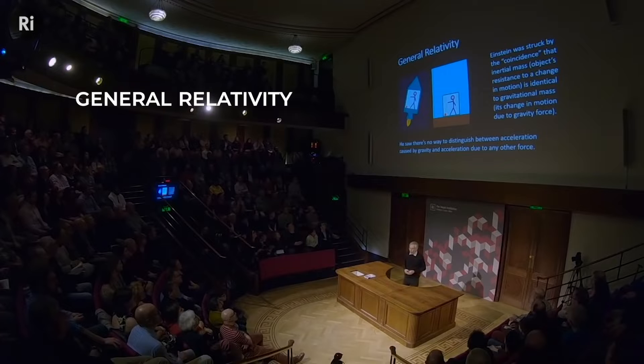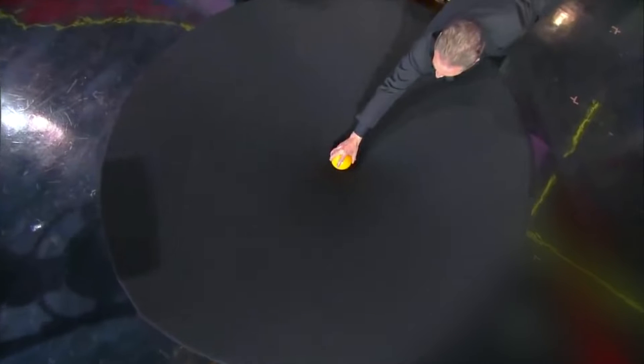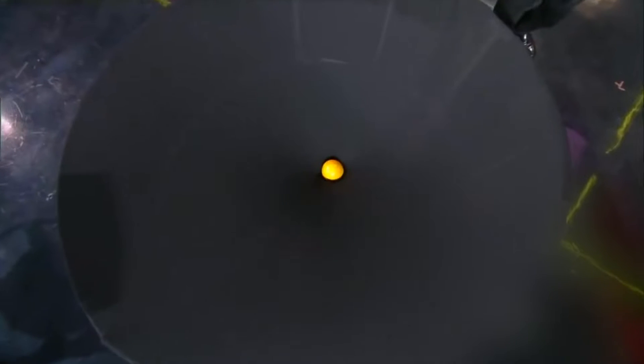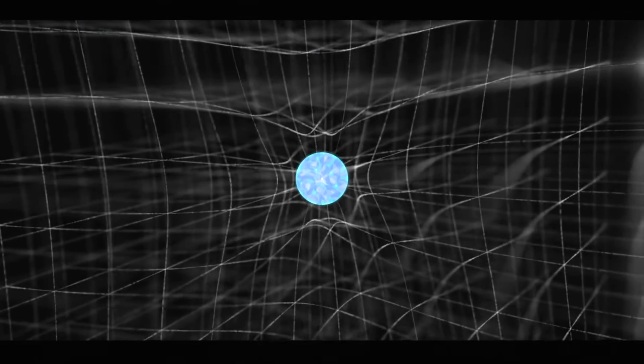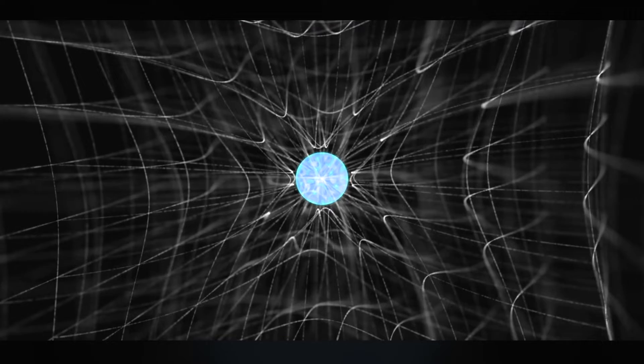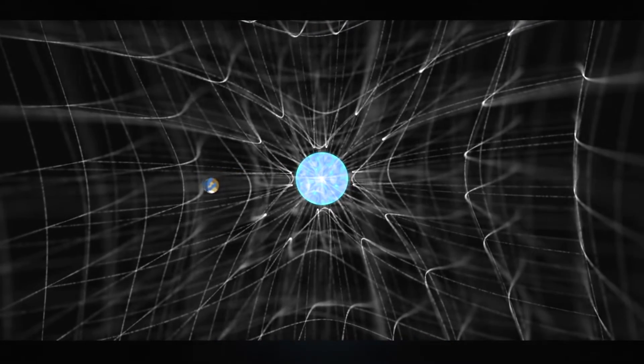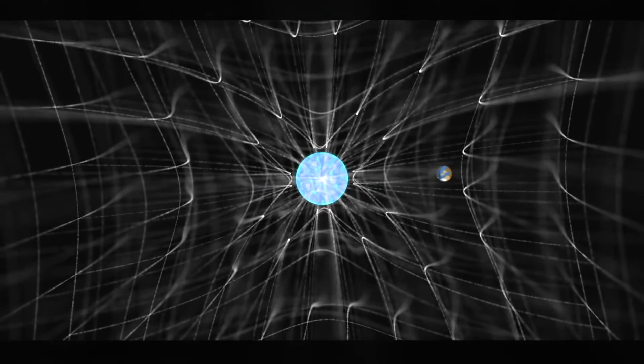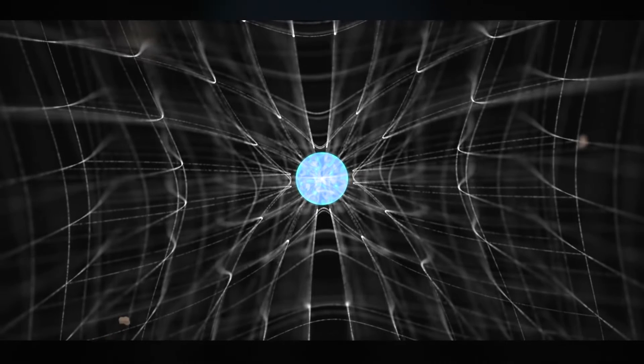General relativity, his most well-known theory, explains how gravity works as a property of the geometry of space and time. Along with a deeper understanding of gravity, general relativity predicts many objects and features in our universe that had never been seen at that point.